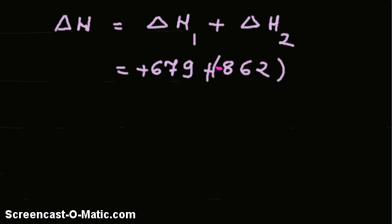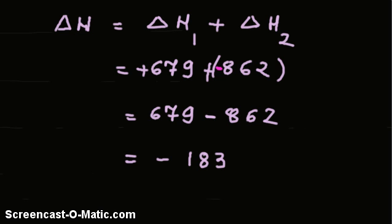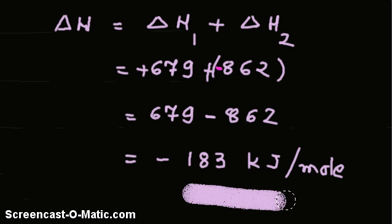So the magnitudes are: this is positive sign plus, but this is having negative sign, so ultimately it becomes 679 minus 862, and obviously the answer is negative 183. And here we write the units, kilojoules per mole. That is the answer.